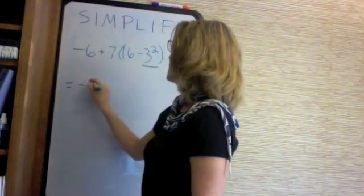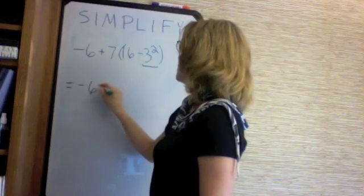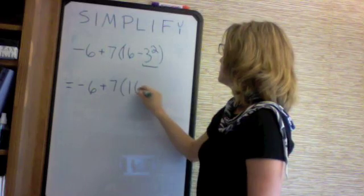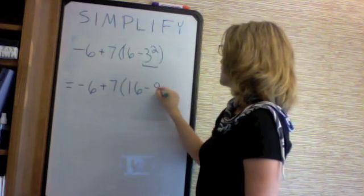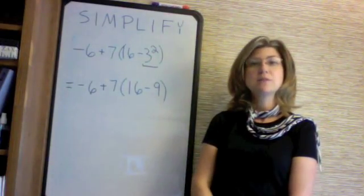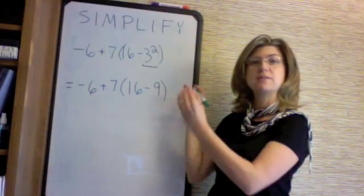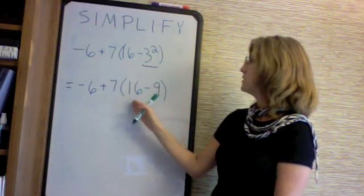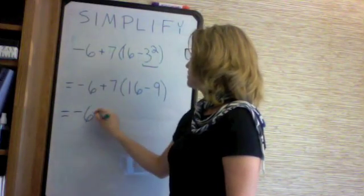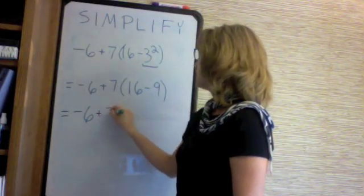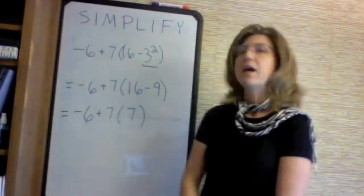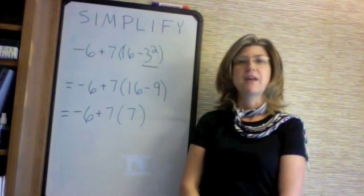So first we will work the 3 squared. This equals minus 6 plus 7 times 16 minus 9, since 3 squared is 9. Next we will simplify working from the inner parentheses out, so we do 16 minus 9. This gives us minus 6 plus 7 times 7, since 16 minus 9 is 7.